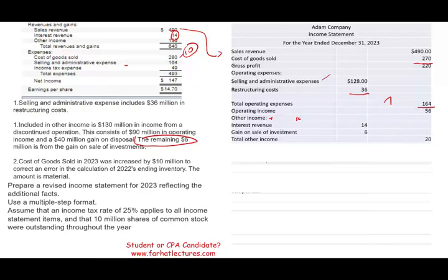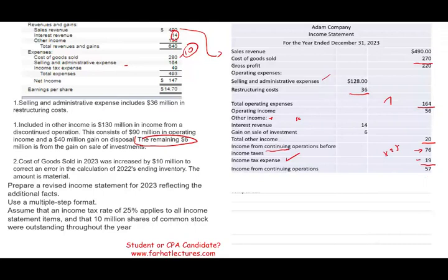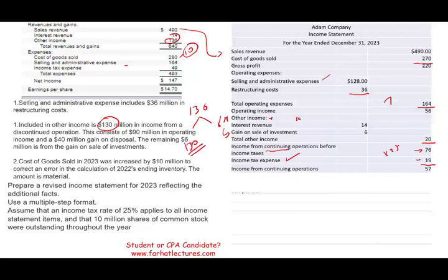We add other income to operating income to get $76 million income from continuing operations before income taxes. Multiplying by 25% gives us income tax expense of $19 million. After deducting taxes, we arrive at income from continuing operations. We call it 'income from continuing operations' rather than 'net income' because this example includes a discontinued operation — we discontinued one of our divisions, which accounts for the $130 million that was part of the $136 million in other income.